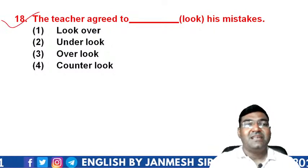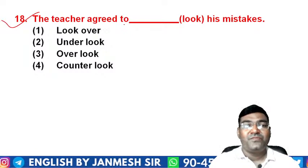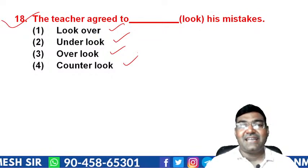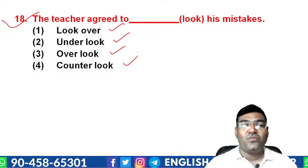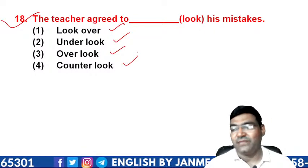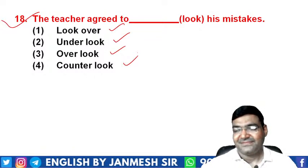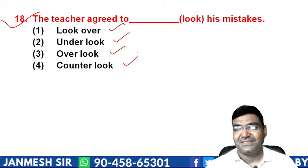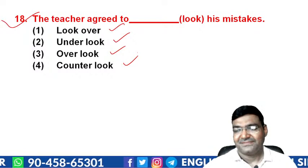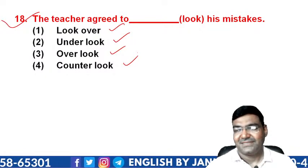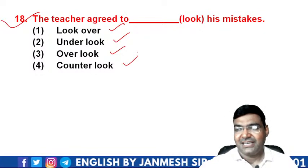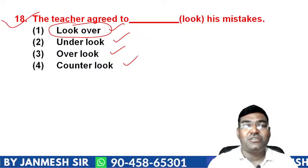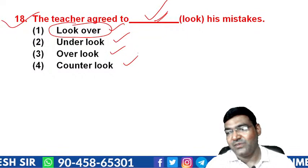Question 18: 'The teacher agreed to _____ his mistakes.' Options are 'look over', 'under look', 'overlook', or 'counter look'. 'Look over' means to inspect or examine carefully. The teacher agreed to look over — that is, pay attention to — his mistakes. So the answer is option A — 'look over'.